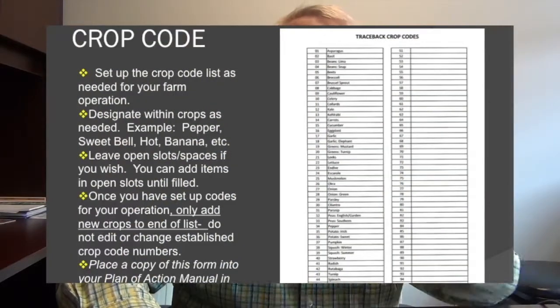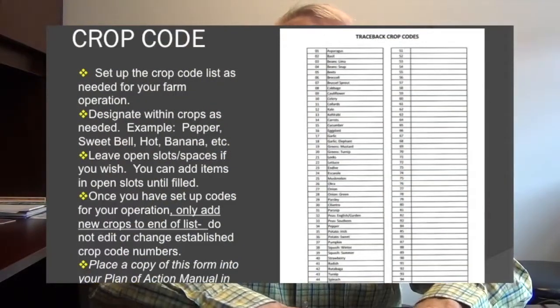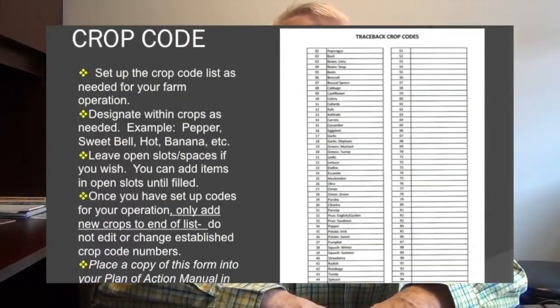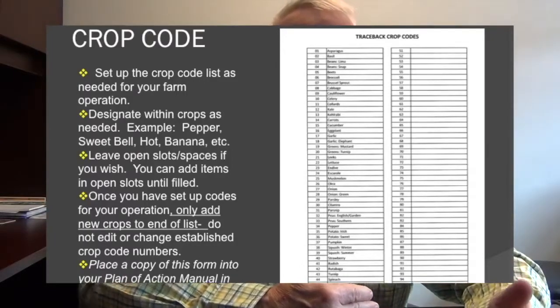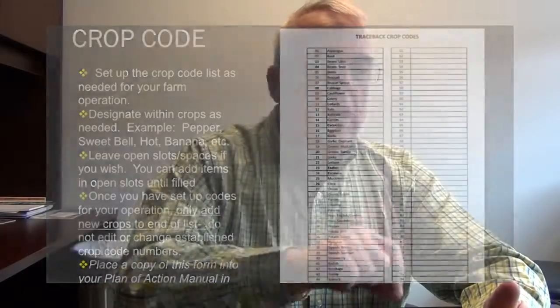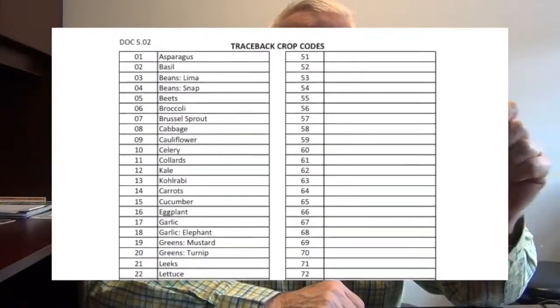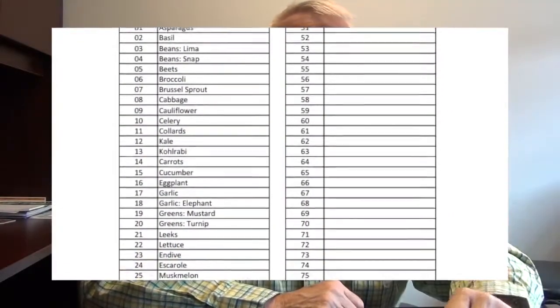This can allow you some leeway in your harvest — it won't shut down your income flow. So it's very important: perennial crops, identify down to the variety; annual crops, identify down to the crop type. That kind of gives you an idea, and you've got a sheet there to record your codes.